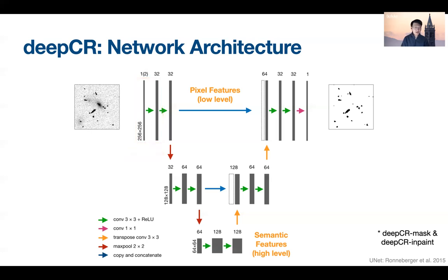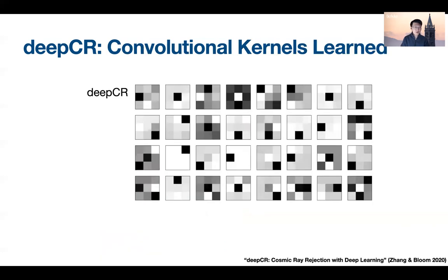DeepCR is a combination of two independent networks. The first is the mask network. The second inpainting network takes in both the image and the segmentation mask and predicts the missing pixel values. Something interesting we observed: we looked at the kernels learned in the first layer, and one filter looks exactly like the Laplace kernel. So DeepCR is not only able to learn the Laplace transformation, but also learns all sorts of filters that are useful for distinguishing between stars and cosmic rays.